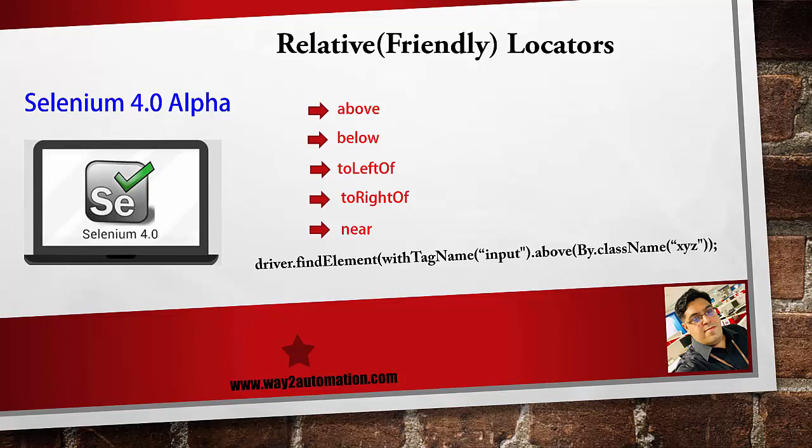New locator strategies are being introduced where you can find an element with a particular tag name that is above, below, to the left, to the right, or near a particular element. This is very important because we've seen exceptions like element interrupted exception or element not clickable, where we used to create complex dynamic XPaths combining siblings, parent, and child hierarchies. Relative locators will help by letting you straightforwardly specify that an element is to the right or left of another element.